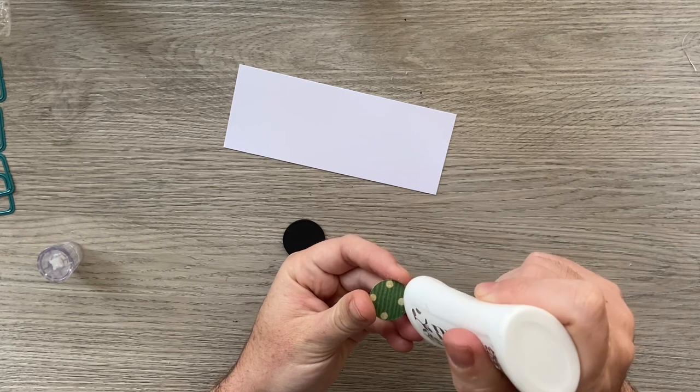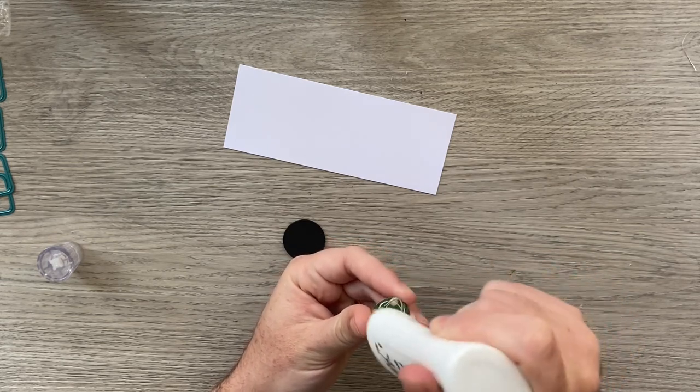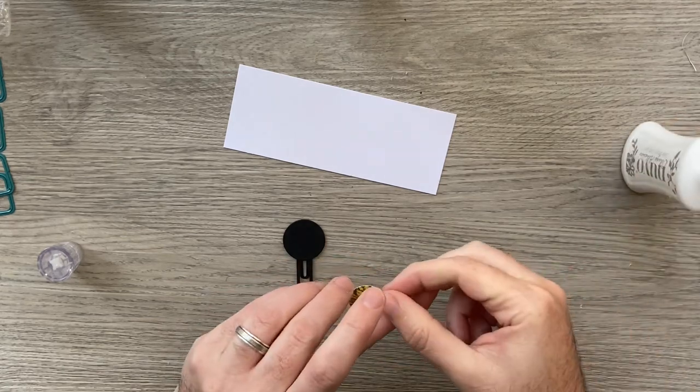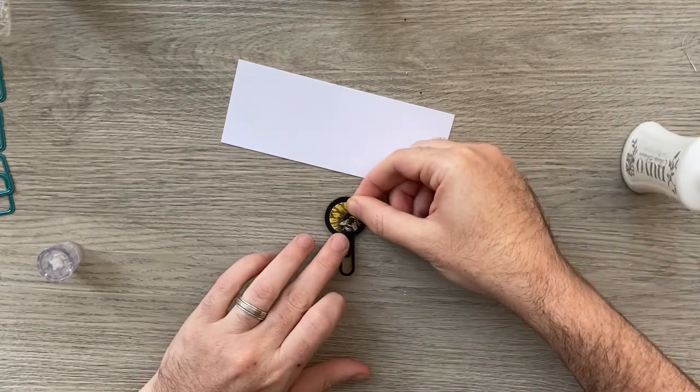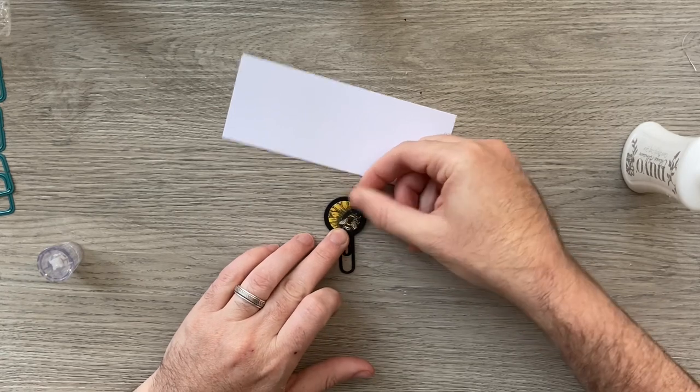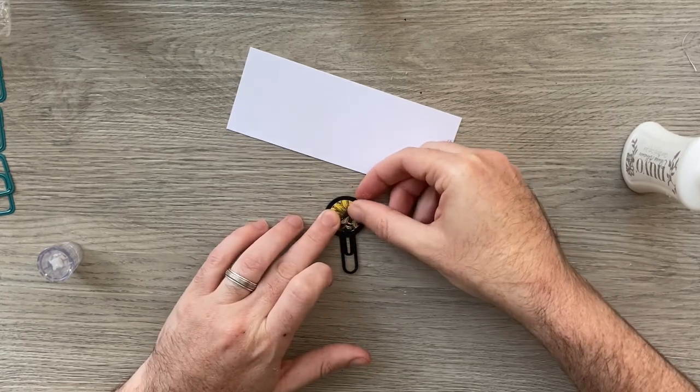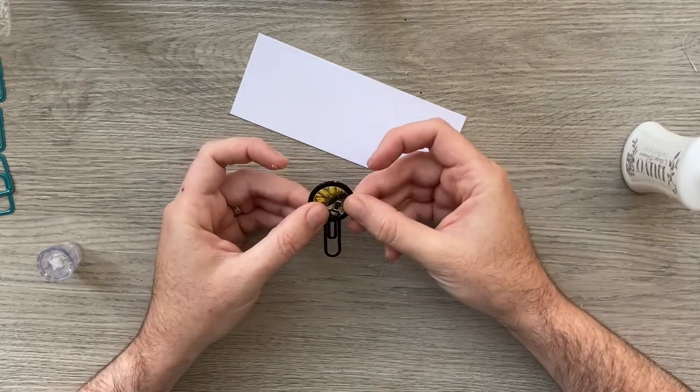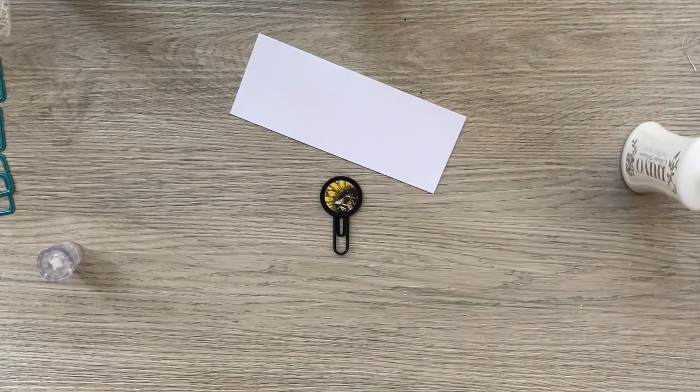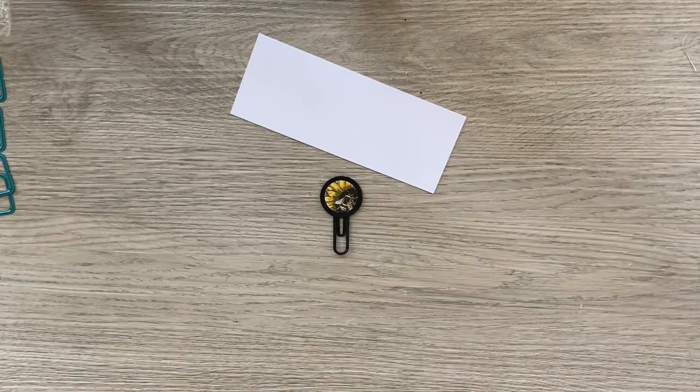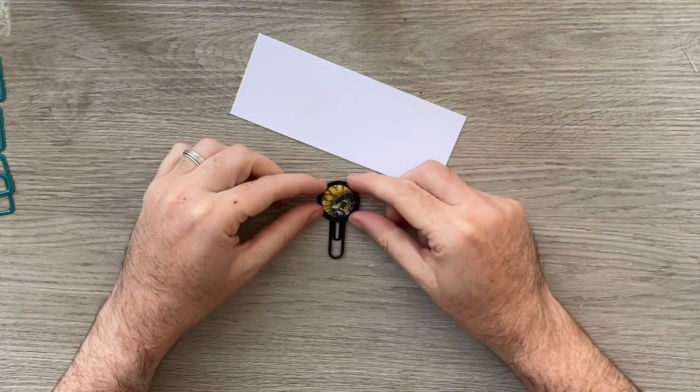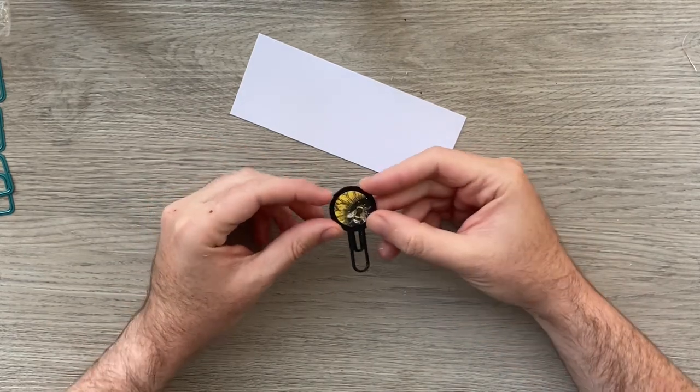This one has got a little B in it. So let's make sure the B is in a nice position. And there we go. In a couple of minutes, I've got a lovely little embellishment ready to go on to my project.